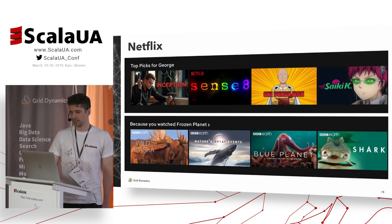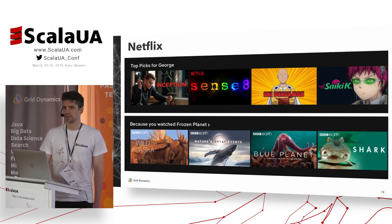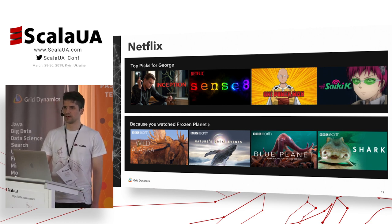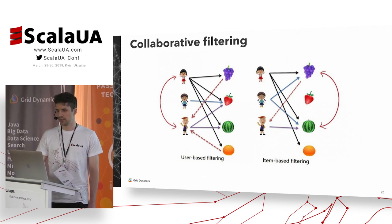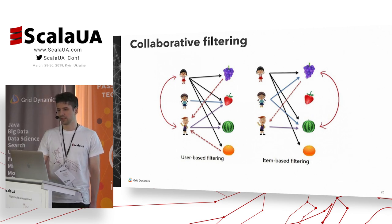The next example is Netflix. Netflix's recommendation system isn't a single algorithm but rather a set of different models serving different use cases, such as personalization, because-you-watched, trending now, popular now, continue watching, and so on. There is something in common between all these examples: one way or another, all of them analyze user behavior and feedback. This kind of recommendation system is called collaborative filtering.